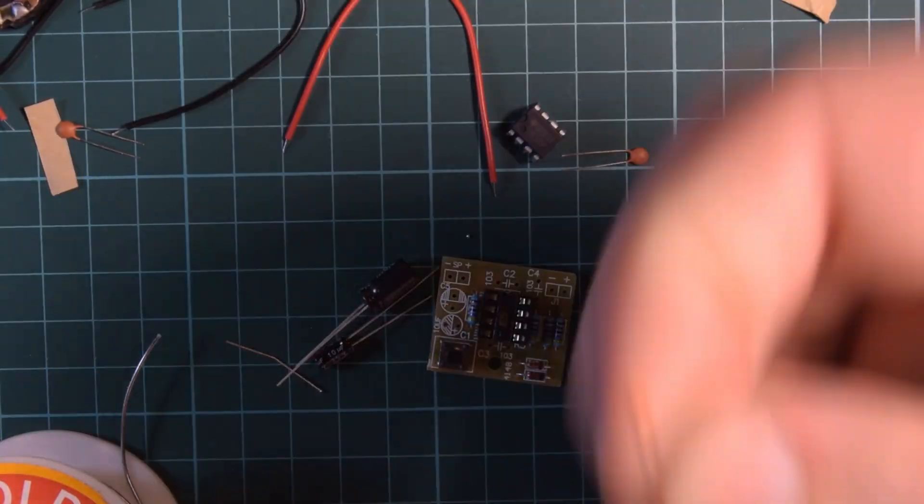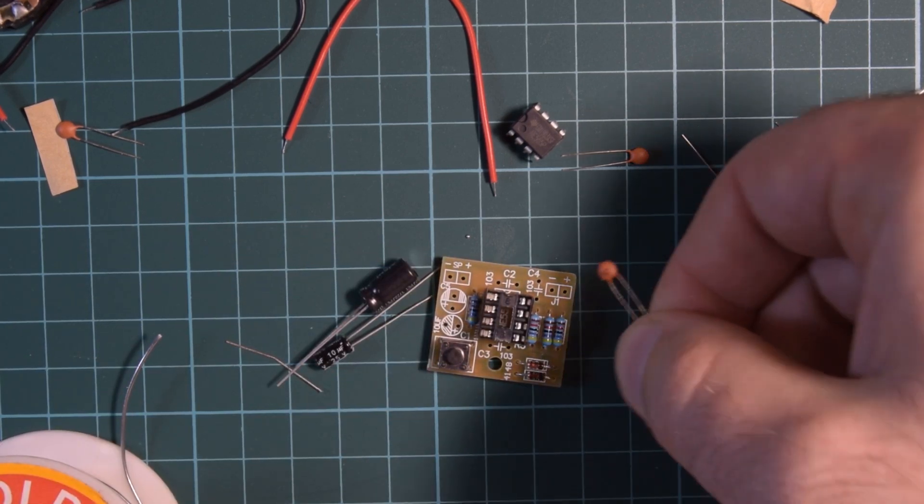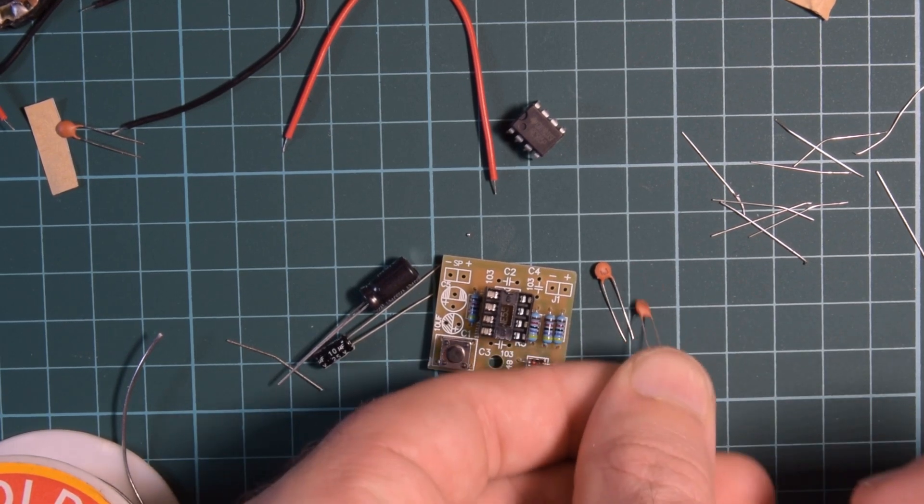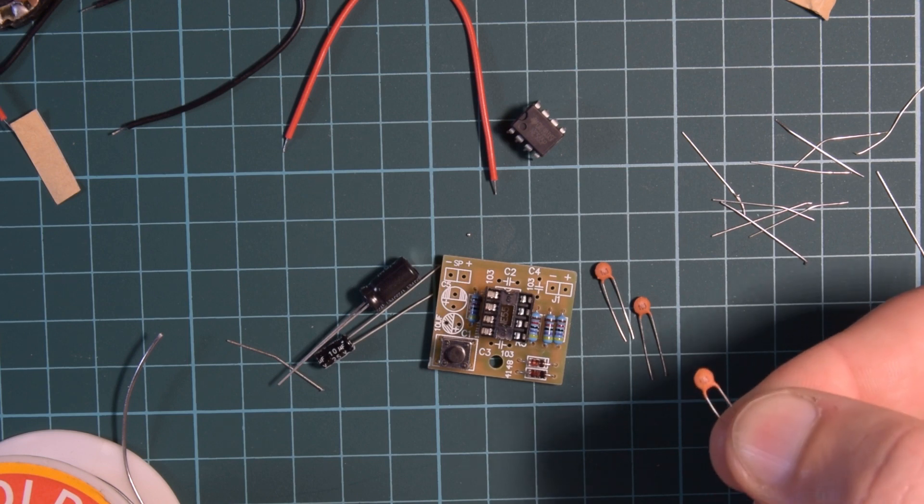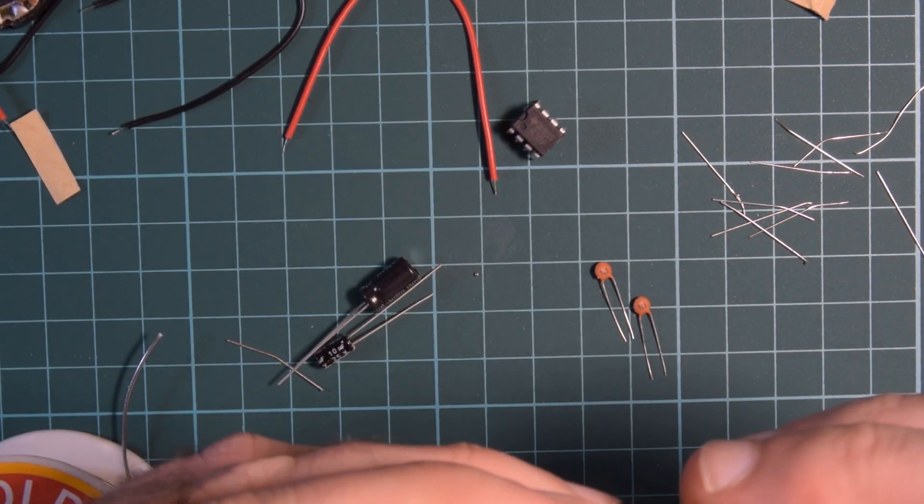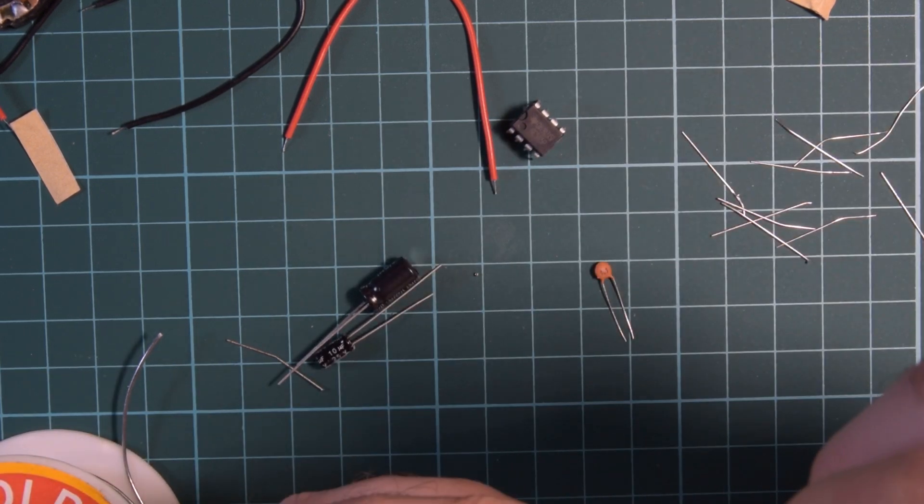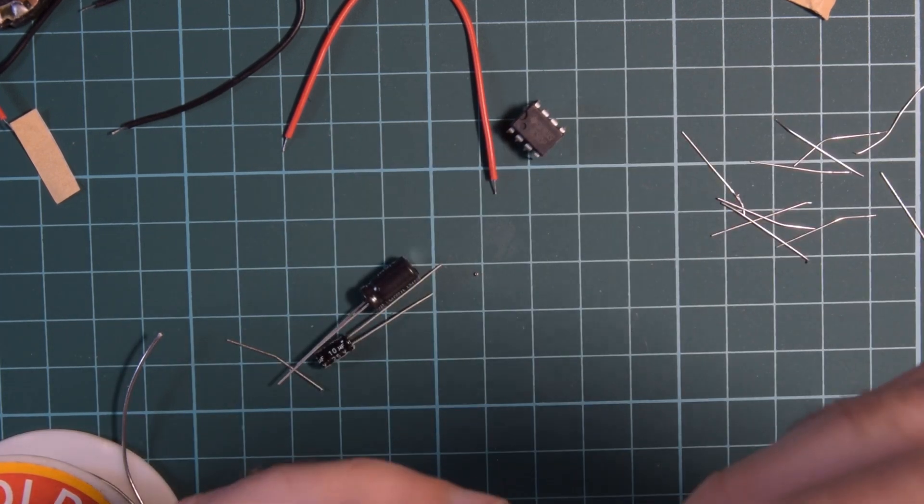So caps. What do we have here? 103. I think that's 0.1. I think that's 10 nano. 103 and 103. So all the same. I'll pop them on there. One, two and three.